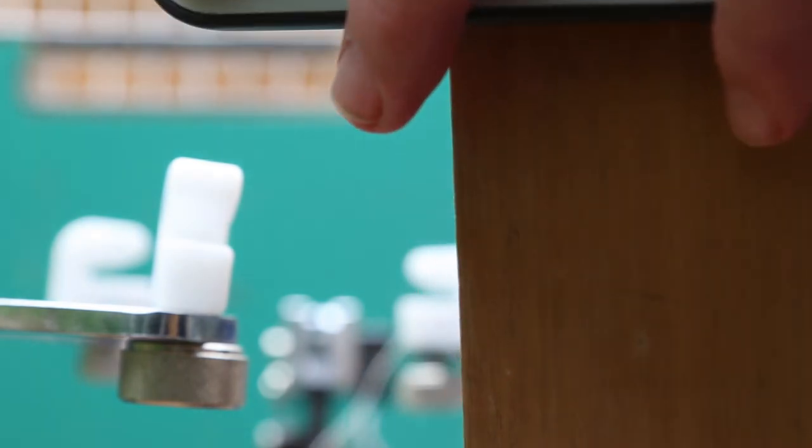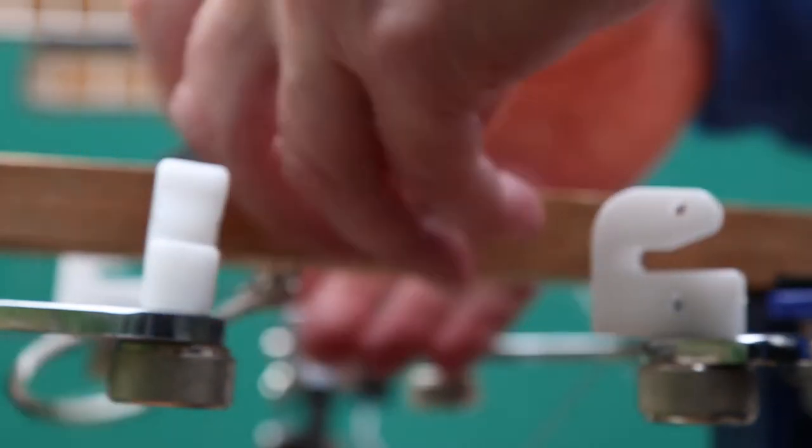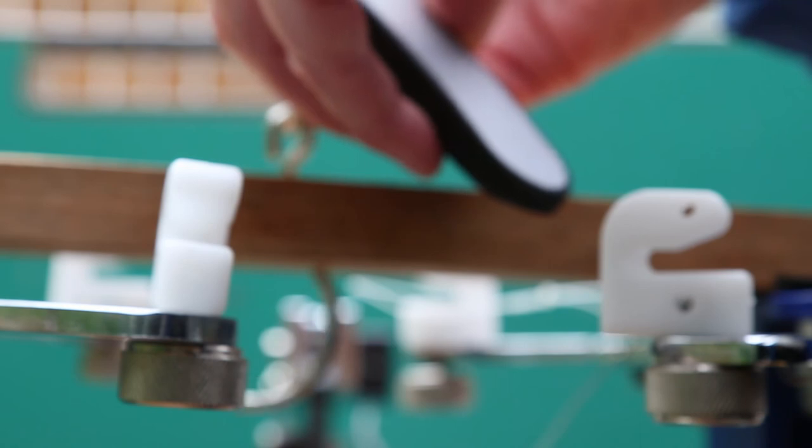Testing at three different tensions allows me to check that it's linear and to make sure that I can be certain that the poundage that shows on the scale is what is actually being put into the string.